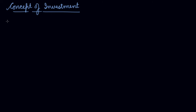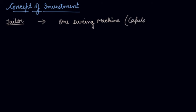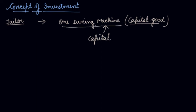In this video we will be studying about the concept of investment. Suppose you are a tailor and you are the manufacturer of clothes — you make stitched clothes. You plan to open a business and you buy one sewing machine. In this case you have bought a capital good that can be repeatedly used to manufacture or stitch the clothes. This is your capital good, and this is the capital that you have invested in your business.